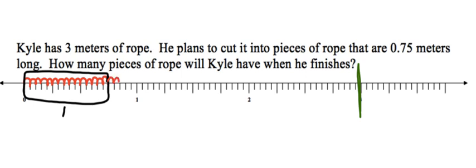5, 10, 15, 20, 25, 30, 35, 40, 45, 50, 55, 60, 65, 70, 75. That's another group of 0.75.